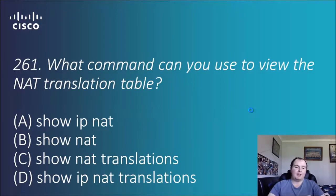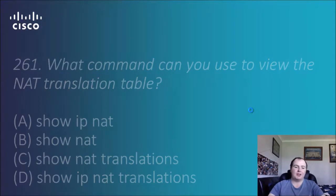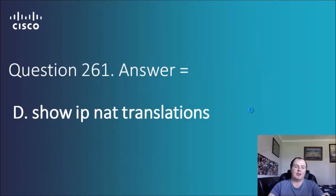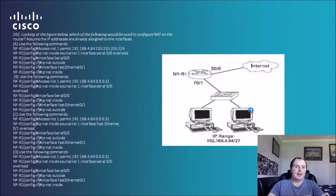Question 261: what command can you use to view the NAT translation table — 'show IP NAT', 'show NAT', 'show NAT translation', or 'show IP NAT translations'? The answer is D — 'show IP NAT translations'. And we've got a really big one right at the end of the video here.